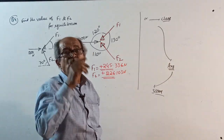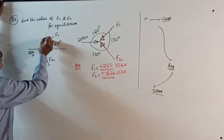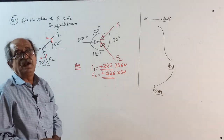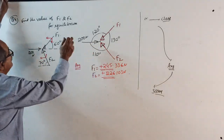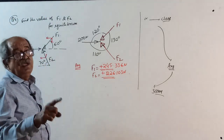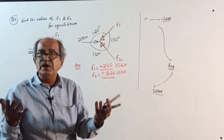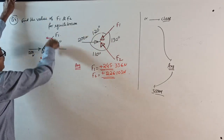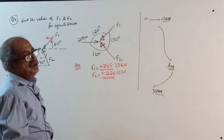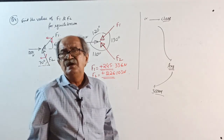Or solve by equilibrium. The angles with horizontal are given directly. Sigma Fx = 0: −F1 cos60 + 200 = 0 — equation 1. Sigma Fy = 0: −F1 sin60 + F2 sin70 = 0 — equation 2. Solve for F1 and F2. The answer will be the same as from Lamy's theorem.